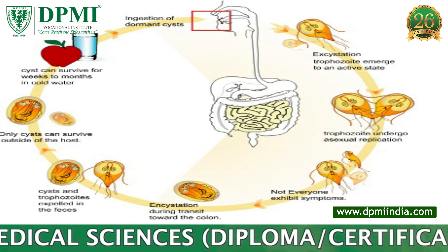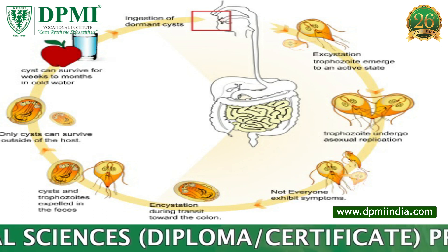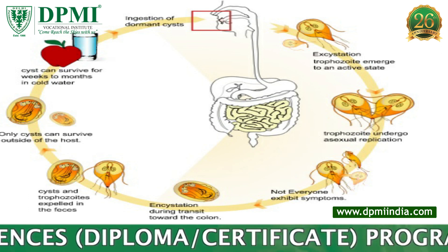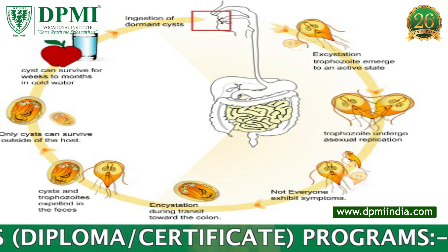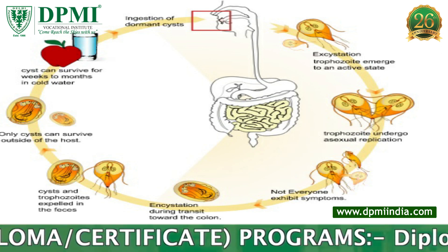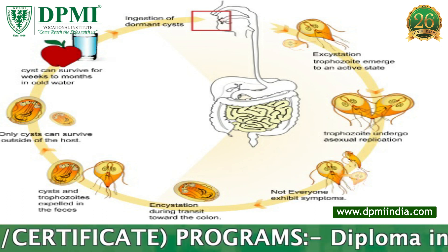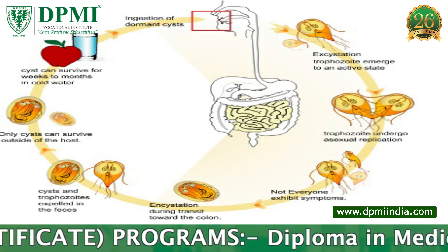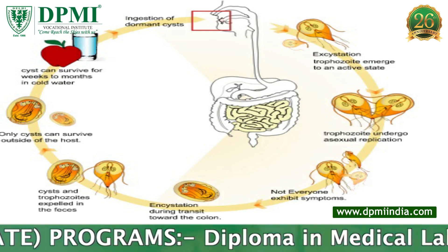Encystation: it occurs when trophozoites pass down to the large intestine, involving retraction of flagella and forming a cyst wall. On maturation, nuclei divide to become four, and cysts are excreted in feces.